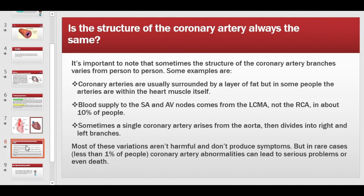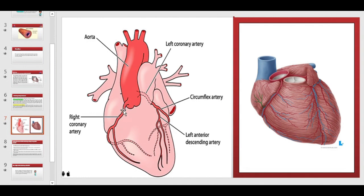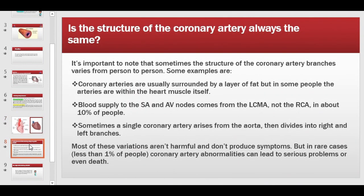Is the structure of the coronary arteries always the same? Anatomical variations are always present. Normally, the coronary arteries are surrounded by a layer of fat and run on the surface of the heart. But in some people, the arteries are embedded within the heart muscle itself — a condition called myocardial bridging. This is a common variant that is generally not problematic unless it interferes with the heart's blood supply.